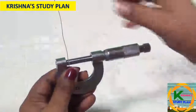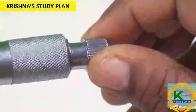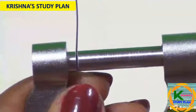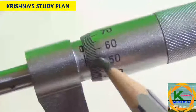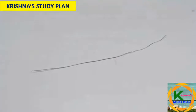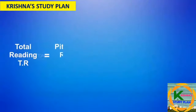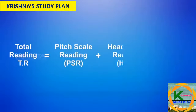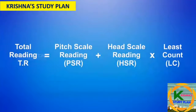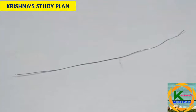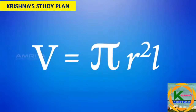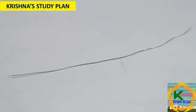Place the given wire between the tip of the screw and stud by tightening the ratchet. Note down the Pitch Scale Reading (PSR) and Head Scale Reading (HSR). The diameter of the wire can be calculated using TR = PSR + HSR × LC. Calculate the volume of the wire using V = πR²L, where the length L of the wire is measured using a meter scale.